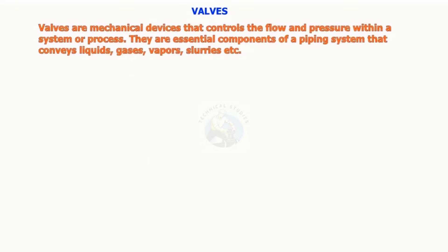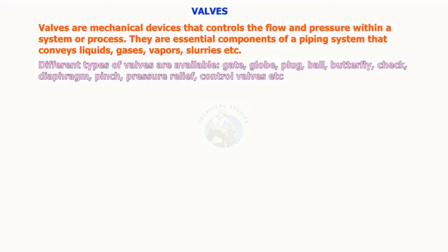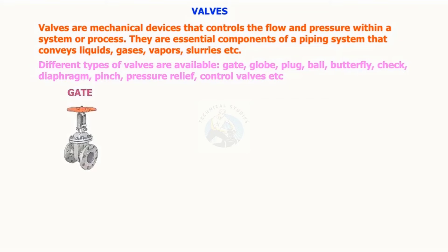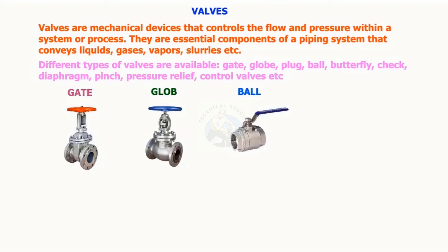Valves are mechanical devices that control the flow and pressure within a system or process. They are essential components of a piping system that conveys liquids, gases, vapors, slurries, etc. Different types of valves are available: gate, globe, plug, ball, butterfly, check, diaphragm, pinch, and pressure relief. Control valves are the commonly used valves.